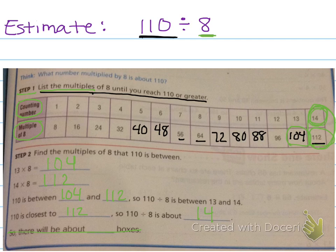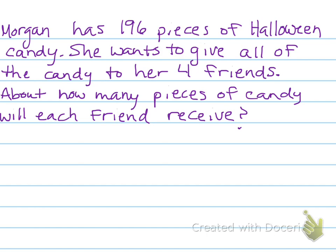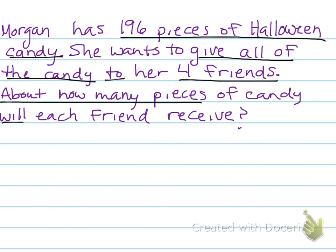So let's try another one. Morgan has 196 pieces of Halloween candy. She wants to give all of the candy to her four friends. Oh, that's nice. About how many pieces of candy will each friend receive? Well, again, you don't have to write down this whole word problem. I'm just going to underline what you should write down. 196 pieces of Halloween candy. Give all of the candy to four friends. About how many pieces will each friend receive? Only the underlined parts. You can just make a bulleted list of that important information. So really what they're asking us is to divide, right? 196 pieces of candy divided by four friends. That'll tell us how many pieces of candy each of the four friends will receive.